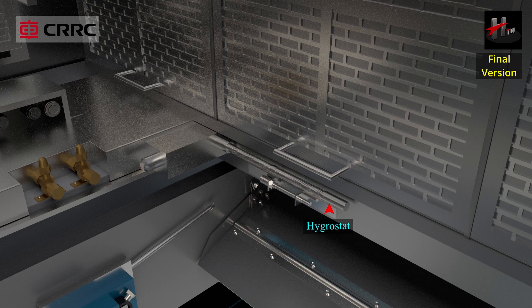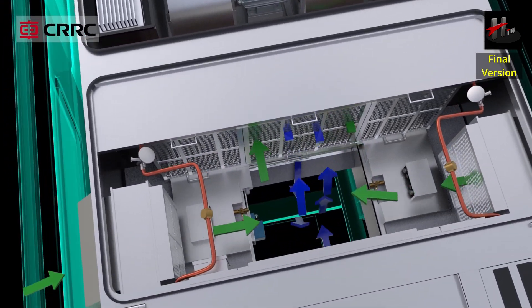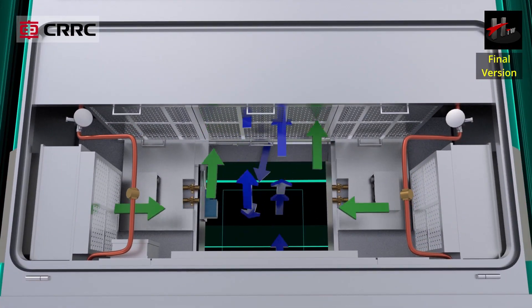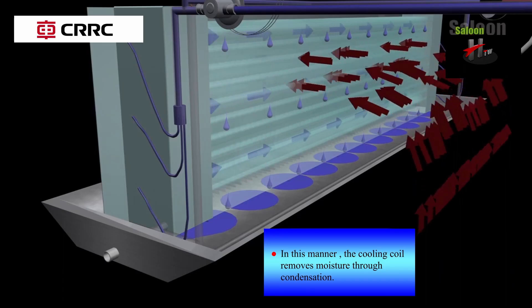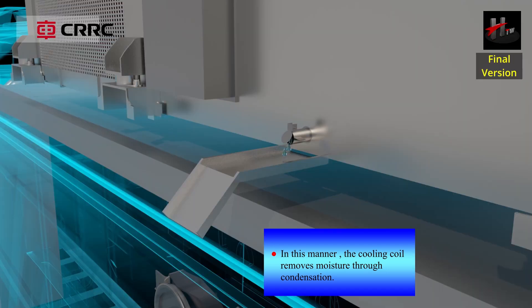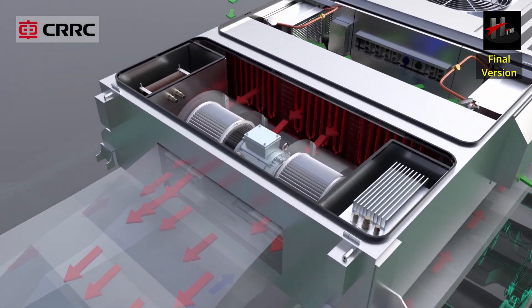When the Hygrostat signals that the relative humidity in the return air is high, one of the two refrigeration circuits is energized together with the heater bank. In this manner, the cooling coil removes moisture through condensation while the heaters prevent the saloon temperature from dropping.